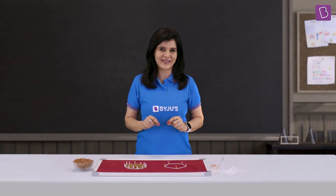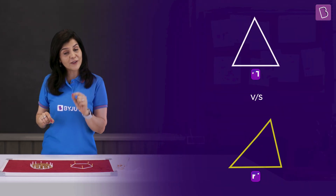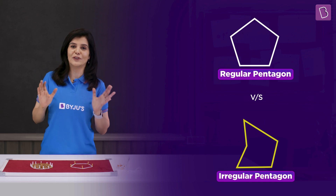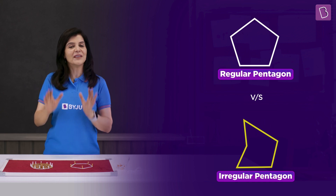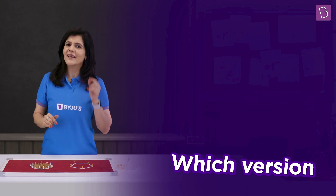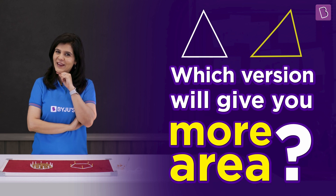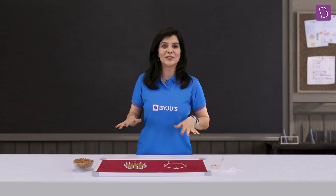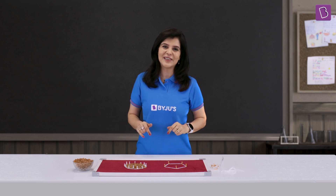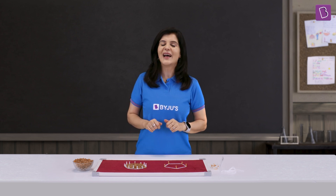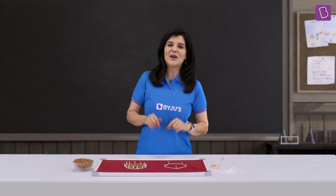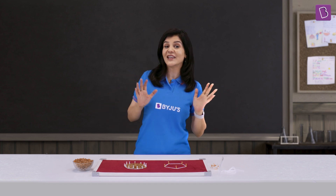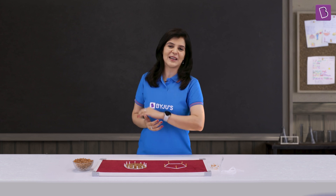Let me leave you with a question. If you take the regular and irregular versions of the same polygon shape, having the same perimeter, then which version will give you more area? You could actually use this exact same setup to check. Let me know your discoveries in the comments below, and I shall see you next time. For more conceptual clarity and engaging learning, subscribe to Baiju's channel.